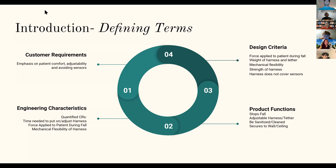From there, we talked about our product functions, the main things that our harness and tether need to be able to do. That includes stopping the fall, being adjustable, being sanitized, and securing either to the wall or ceiling. That takes us to our design criteria, what we're judging each of our concepts against.